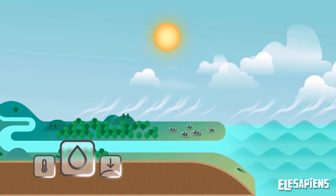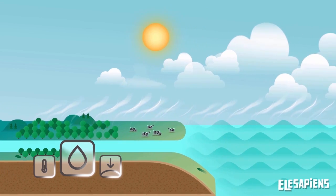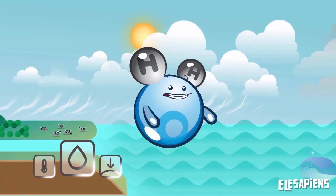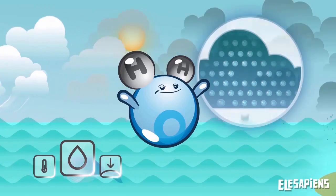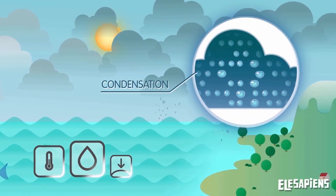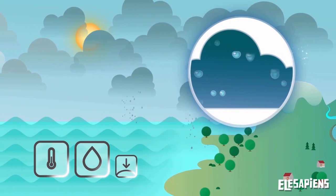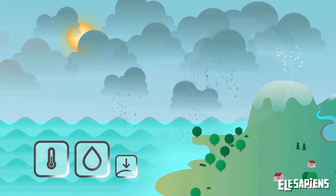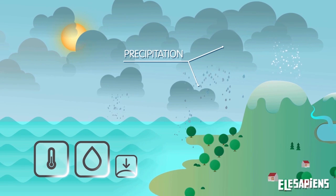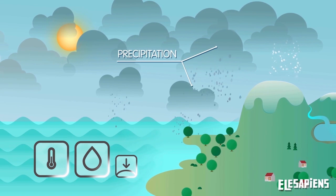Have you heard of the water cycle? Humidity and temperature in the atmosphere are responsible for the formation of clouds and rain.